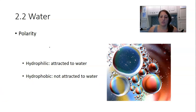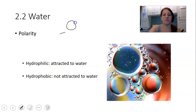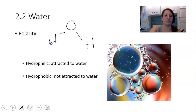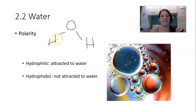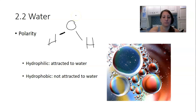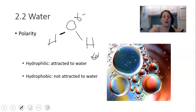Water is a polar molecule, as we went over in the last video. Water is made up of one oxygen atom covalently bonded to two hydrogen atoms. These lines connecting the oxygen and hydrogen atoms represent single covalent bonds that are polar. What that means is that the electrons being shared are not shared equally, and so oxygen gets a partial negative charge and the two hydrogens get a partial positive charge.